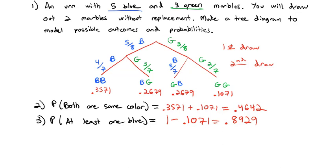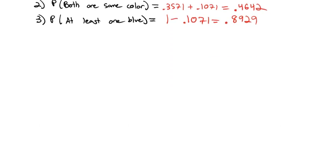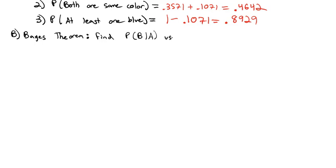That's how using a tree diagram can greatly facilitate our conditional probability calculations. One very important application is to facilitate what is called Bayes' theorem. Bayes' theorem is a way to find a conditional probability — like the probability of B given A — using known values of the probability of A given B. In other words, the given values are backwards from what we want.